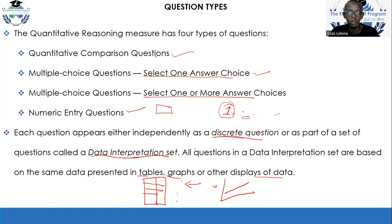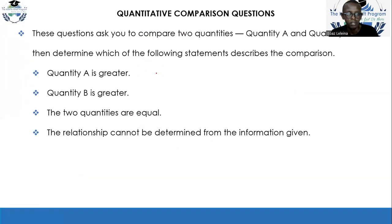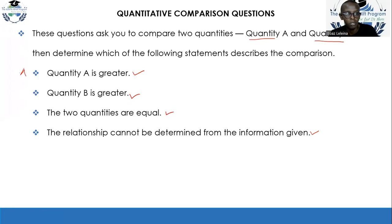For the quantitative comparison questions, you are given two quantities — quantity A and quantity B. You are asked to compare these two and determine if quantity A is greater, quantity B is greater, if the two quantities are equal, or if the relationship cannot be determined. This gives you option A, option B, option C, and option D — you can only select one of these options.